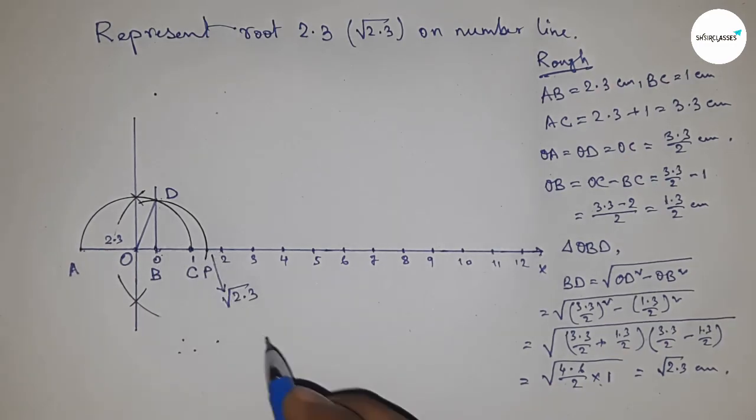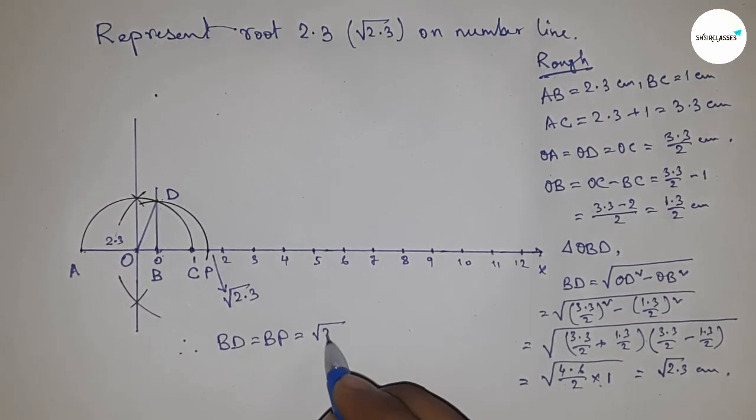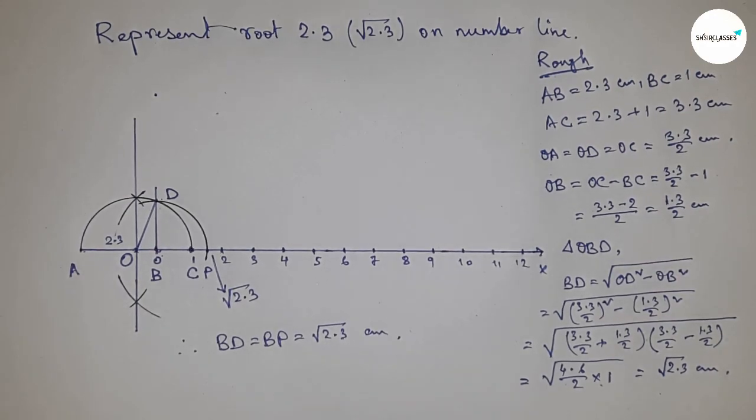Therefore, the distance BD and BP are equal, so BD equals BP equals root 2.3 centimeters. That's all. Thanks for watching. Please subscribe, like, and comment on my video.